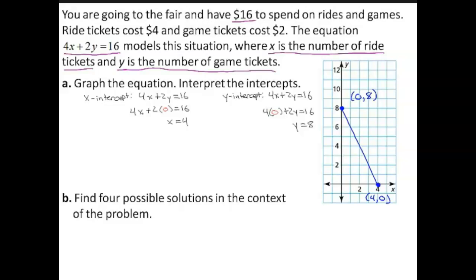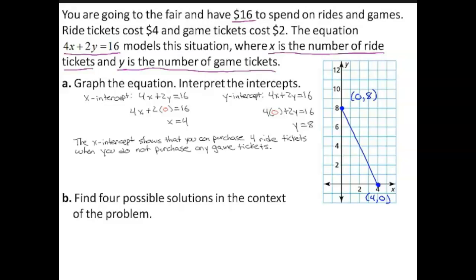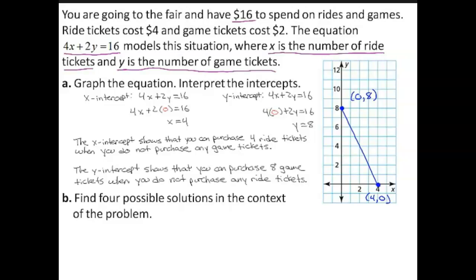Because x is 4, the x-intercept shows that you can purchase 4 ride tickets when you do not purchase any game tickets. Because the y-intercept is 8, the y-intercept shows that you can purchase 8 game tickets when you do not purchase any ride tickets.